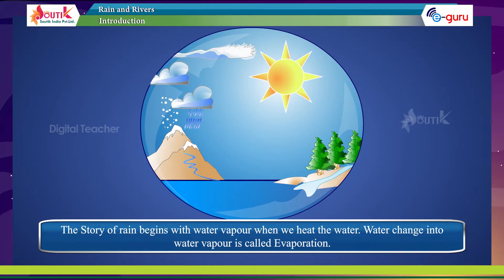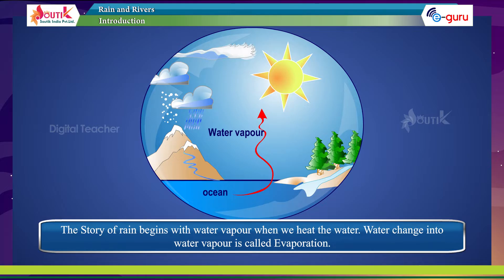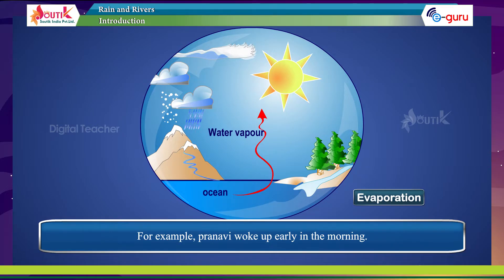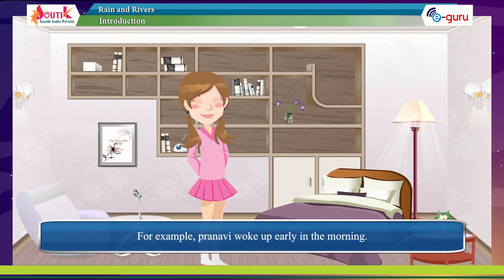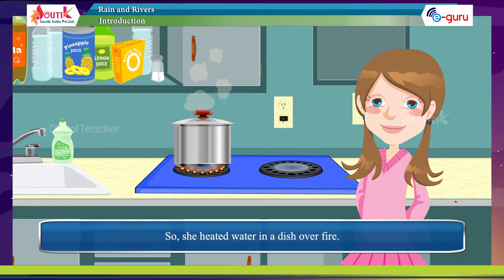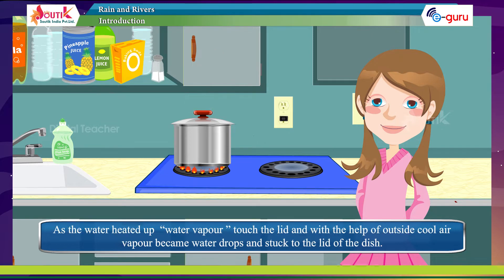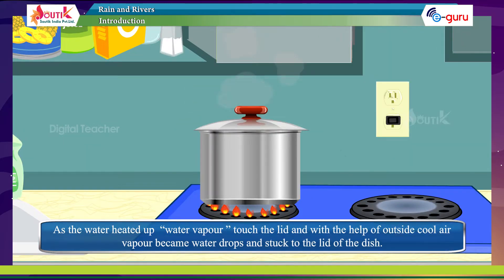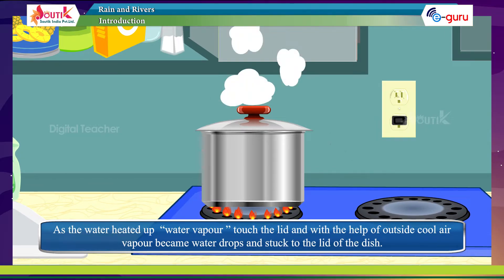The story of rain begins with water vapor. When we heat water, it changes into water vapor — this is called evaporation. For example, Pranavi woke up early in the morning and needed to take a bath in hot water, so she heated water in a dish over fire. As the water heated up, water vapor touched the lid and, with the help of outside cool air, the vapor became water drops and stuck to the lid of the dish.